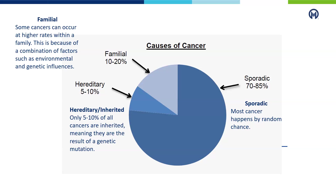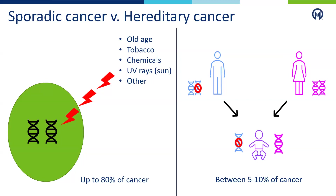Only 5 to 10% of cancers are considered hereditary or inherited, which are the result of a genetic mutation that someone is born with. To review the difference between sporadic and hereditary cancers: sporadic cancers can have a couple of known causes, which can include factors such as old age, tobacco use, exposure to sun or chemicals, and other considerations that can cause damage to certain genes that can then develop into cancer. Hereditary cancers happen when someone is born with a genetic mutation present in all cells in their body, and these mutations have a 50-50 chance of being passed down to future generations.